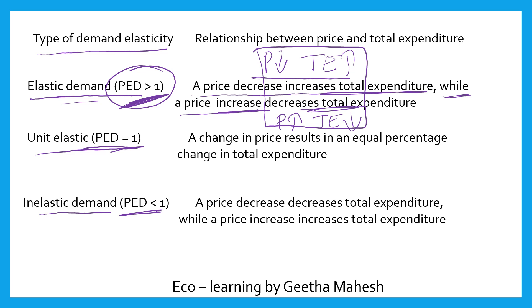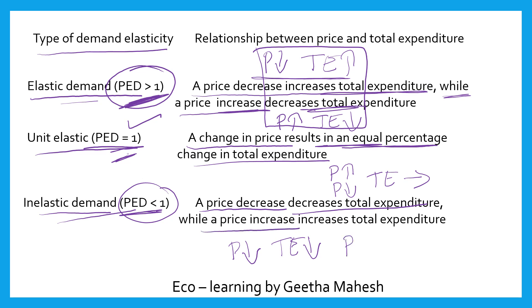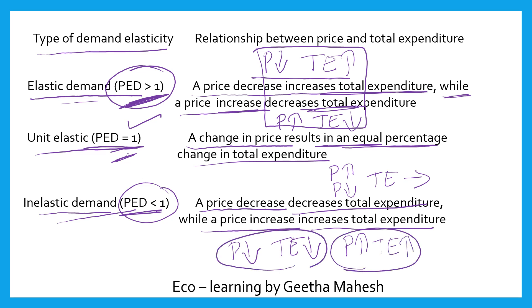In the second case — unit elastic demand — a change in price results in an equal percentage change, so whether price increases or decreases, total expenditure remains constant; there is no change in total expenditure. This indicates elasticity of demand is equal to one. For inelastic demand — less than one — a price decrease decreases total expenditure, while a price increase increases total expenditure; both move in the same direction.